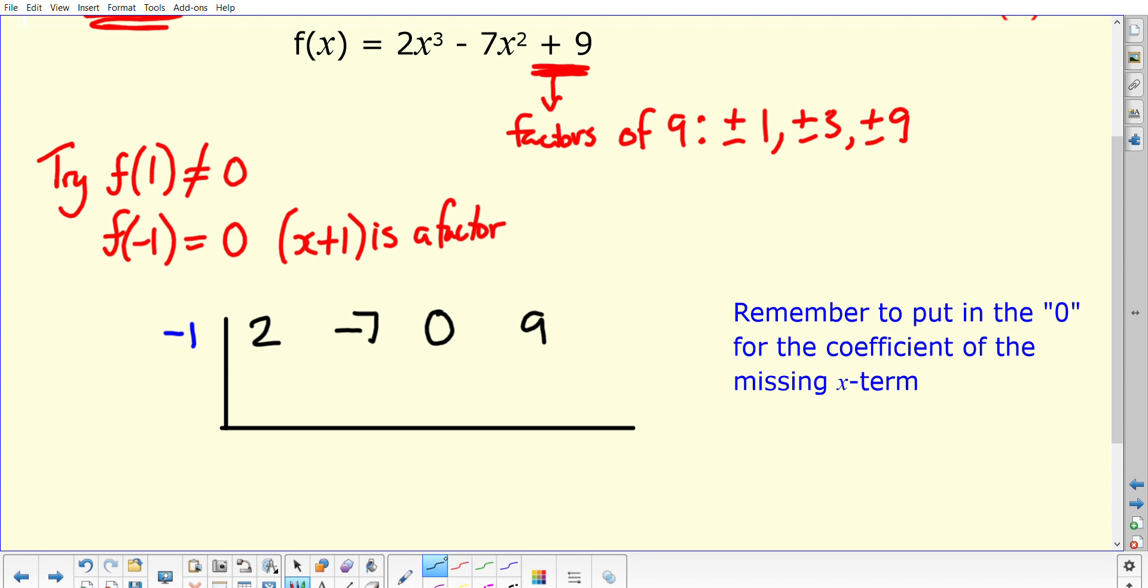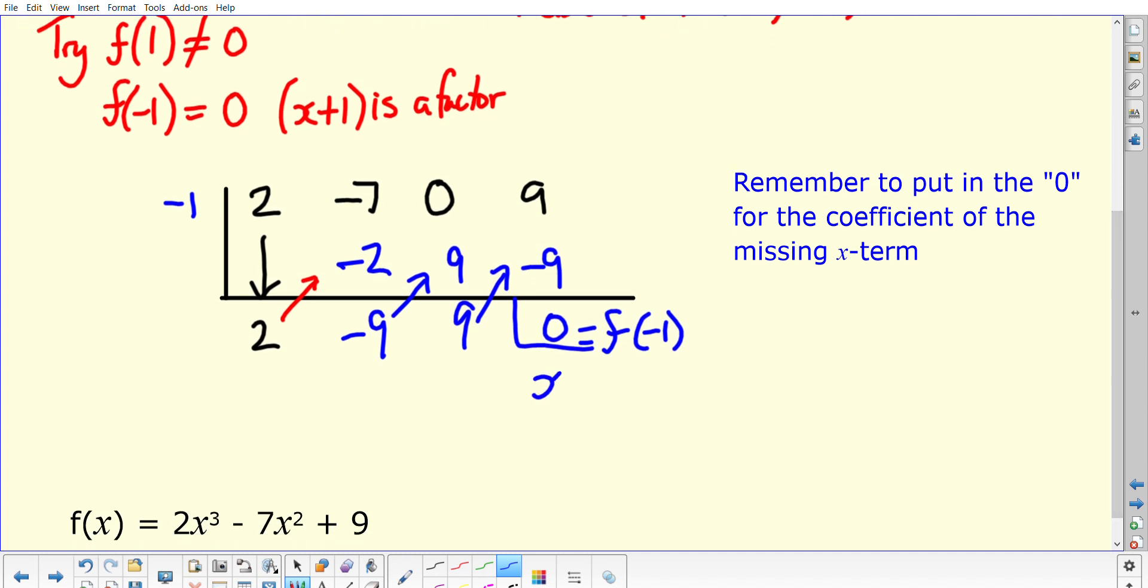First thing: always write down the very first value, and then after that you are multiplying, continuing, and adding. 2 times negative 1 gives us negative 2, then you're adding those, you get negative 9. Times again, you're going to get positive 9. Add together, then you times again, you get negative 9. That's how you get your zero at the end, which of course is the value for f of negative 1. As we've already said, that means x plus 1 is your factor.